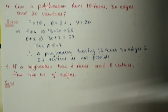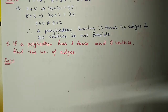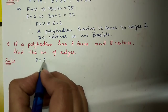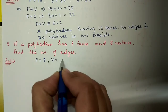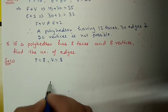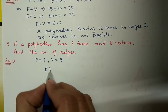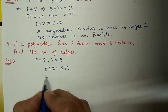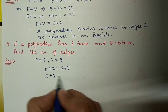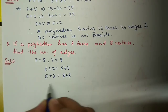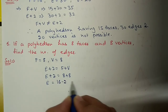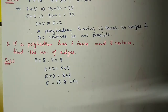Question number 5: If a polyhedron has eight faces and eight vertices, find the number of edges. Using Euler's formula: E plus 2 equals F plus V, so E plus 2 equals 8 plus 8 equals 16, therefore E equals 16 minus 2 equals 14. This polyhedron has fourteen edges.